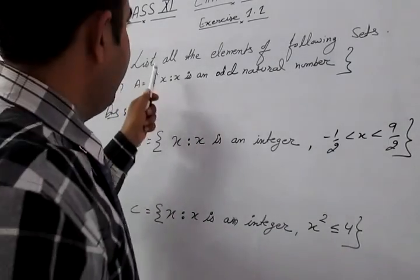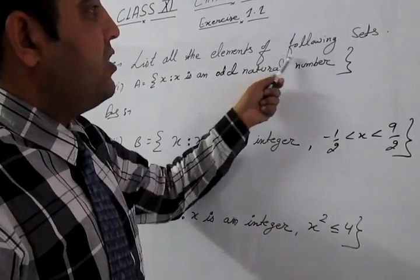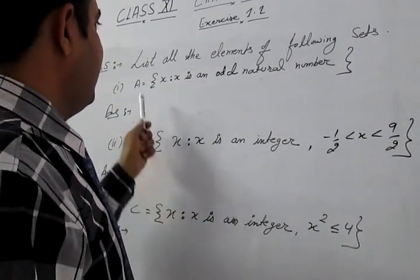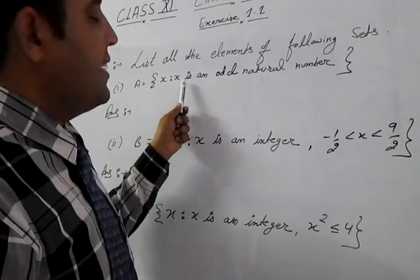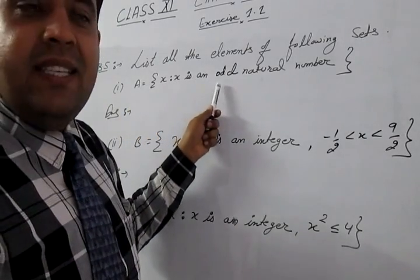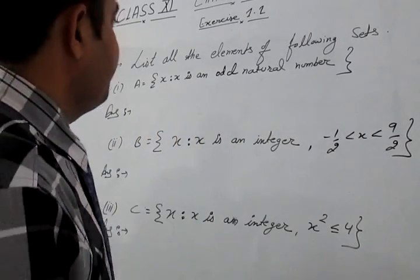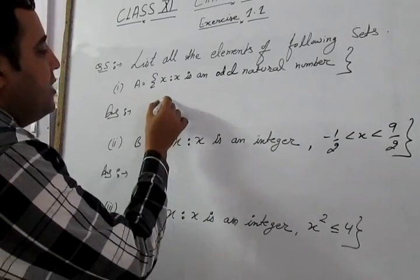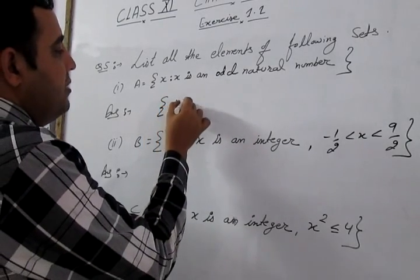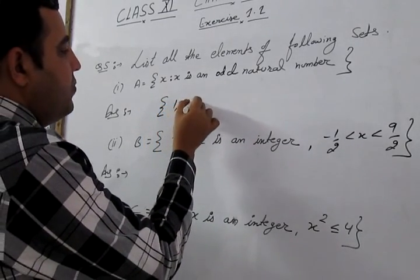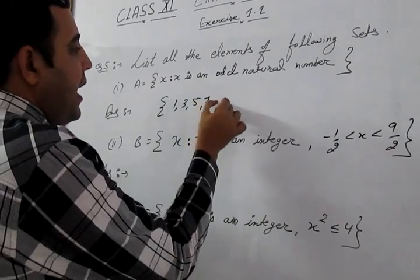Question 5: List all elements of the following sets. Part A: x such that x is an odd natural number. Odd natural numbers start from 1: {1, 3, 5, 7, …} and so on.